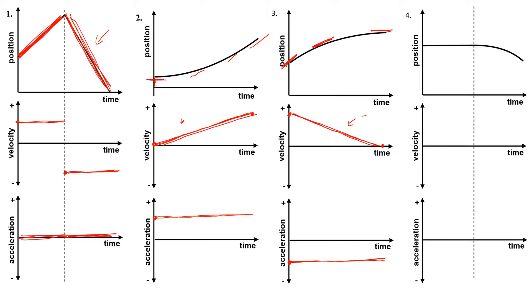To describe this motion, you would say that something starts a few meters away from zero with a velocity to the right, and slows down as it moves to the right. So imagine you're moving to the right and you come to a stop — that's what this shows you.